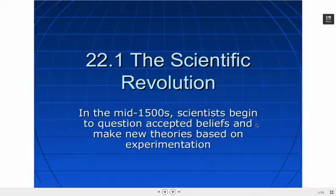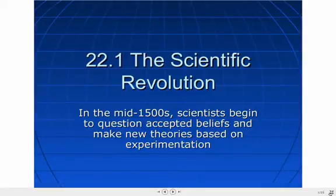Looking at our objectives this week, we have four objectives. First, list the circumstances that lead to the Scientific Revolution. Summarize the development of heliocentric theory, that is looking at Copernicus. Describe the scientific method and explain Newton's law of gravity. And last, we are going to look at the importance of new scientific methods.